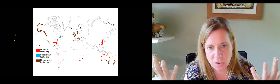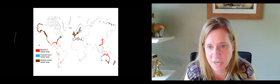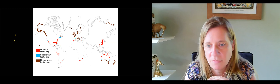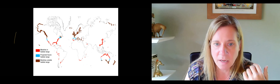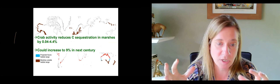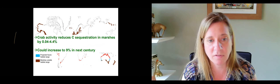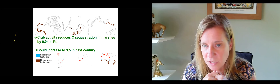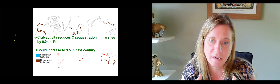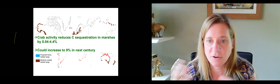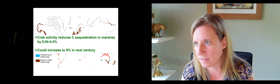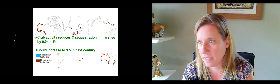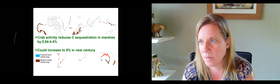Thinking about this more broadly — this is just our temperate salt marsh — if we think about marshes globally that are in the habitat range of fiddler crabs (the red on this map), and the blue areas show the projected future habitat range with climate change: under today's conditions, we did a back-of-the-envelope calculation estimating that crab activity reduces carbon sequestration in marshes by up to about 4% of their total carbon sequestration capacity. But with increased habitat range for the crabs and increased active time with warming, that could about double to about 9% in the next century. These processes could be globally significant in terms of the carbon sequestration capacity of wetlands in the future.